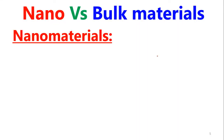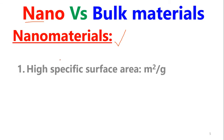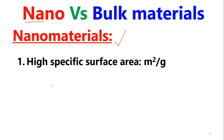Now let's see the differences. When we talk about the pros and cons of a nanomaterial, the reverse applies to bulk material. So in this video, the advantages of nanomaterial are the disadvantages of bulk material. Let's start with the properties of nanomaterials.